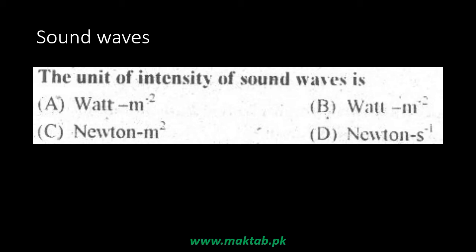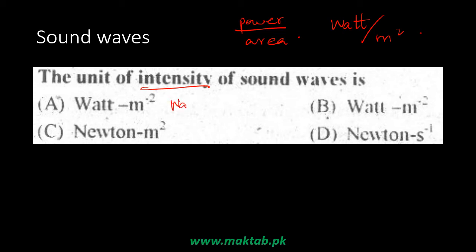The unit of intensity of sound: intensity is basically power per unit area. The unit of power is watt, and area is meter squared, so the unit of intensity is watt per meter square. The correct answer is watt per meter square. Newton per second is not right, and Newton meter square is not right — those are not power per unit area units.